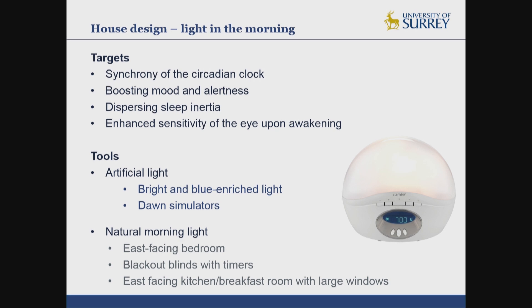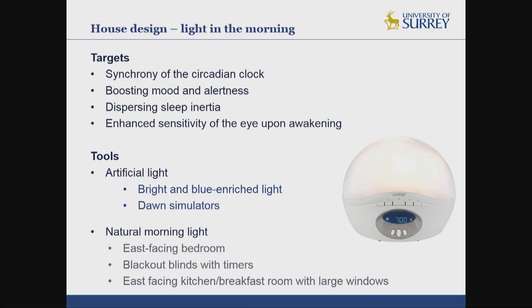In terms of tools to optimise morning light, we can use bright and blue-enriched artificial light, and devices such as dawn simulators where the light gradually comes on during the last part of sleep — this has been shown to help both synchronise the clock and disperse sleep inertia. Similarly, we could use natural morning light by having east-facing bedrooms, blackout blinds with timers that start to come on as we want to wake up, and then maximising light exposure in the rooms people move into next — the kitchen or breakfast room.